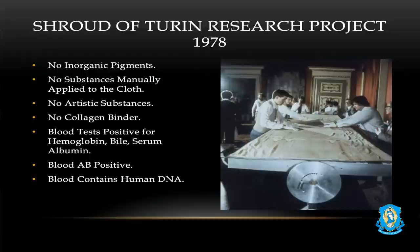Blood tested positive for human aspects of blood like hemoglobin and serum. It tested back AB positive — which is the same blood type found in all Eucharistic miracles. AB positive is the universal receiver, not the universal donor — which means God receives everyone into his heart. And finally, the blood contained human DNA.